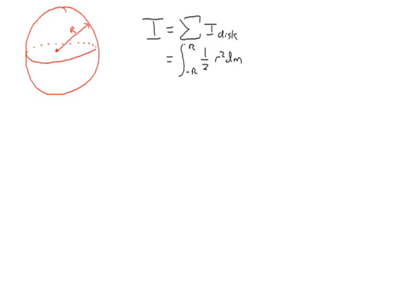Now let's try finding the rotational inertia of a solid sphere of radius r and mass m, rotated about an axis through its center. The sphere can be thought of as infinitely many disks, so I is the sum of the rotational inertias of these disks. Since they're infinitely many, it is the integral from negative r to r of one-half r squared dm, where dm is the mass of a small disk.